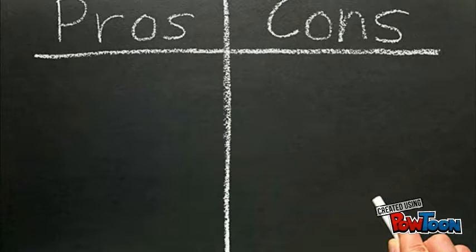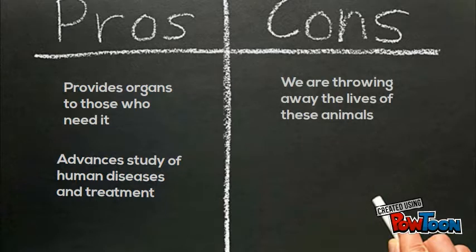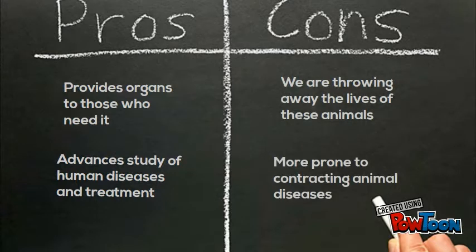When I thought about the topic of transgenic animals and whether I am for it or against it, I felt the need to make a pros and cons list of my own. Because transgenic animals could help provide organs to those in need and help further develop the study of human diseases, but at the same time we are throwing away the lives of these precious animals, not to mention that we could become prone to animal diseases.